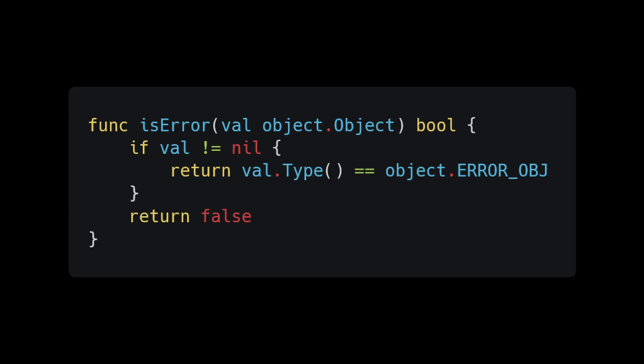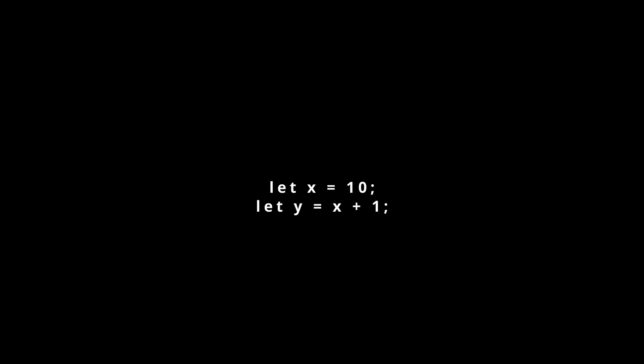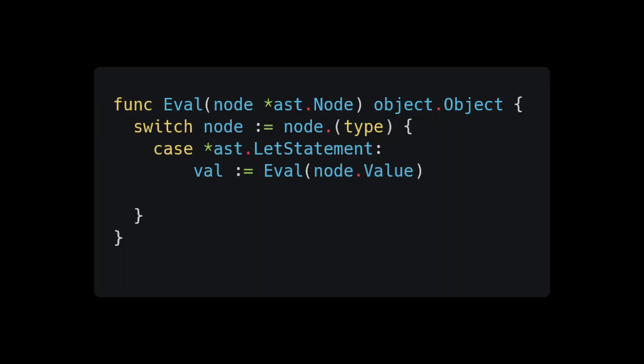Next we're going to add bindings, which will take our language to the next level. We need to be able to use the let statement to bind a value or a function to a variable and access that variable within its scope. Add a case to our eval for let statements — the rub comes after we've evaluated the value on the right hand side: how do we bind it to a name? We could use a global hash map, but that would linger even when the variable's scope has closed. Therefore we want to create the concept of a scope, or an environment.